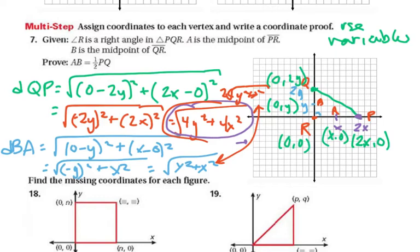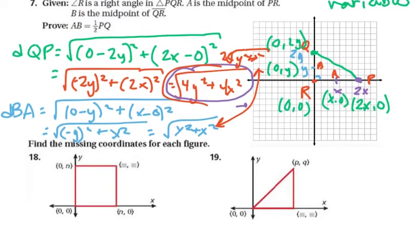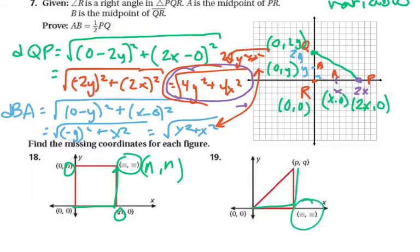Interestingly, we used to have an entire chapter of just coordinate proofs, and it ended up being very algebra-heavy. The next problem asks us to find the missing coordinates for each figure. Based on our previous work with variables, to get to a certain point we go over N and up N, so the coordinate is (N, N). For the other figure, starting at (0, 0) going over P and up Q gives (P, Q), and going over P but up nothing gives (P, 0).